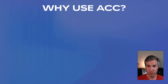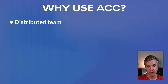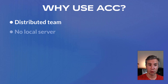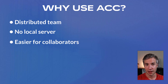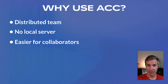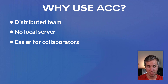Now let's talk about the pros of using ACC. The first one is the idea of a distributed team — you can have team members working all around the world on the same files in the cloud easily. There are no more local servers needed to host your Revit files, so in theory you could save some money with IT management. It's easier for collaborators — if you have BIM consultants helping you on a project, you can give them access to the cloud instead of sending files back and forth or trying to give them VPN access.